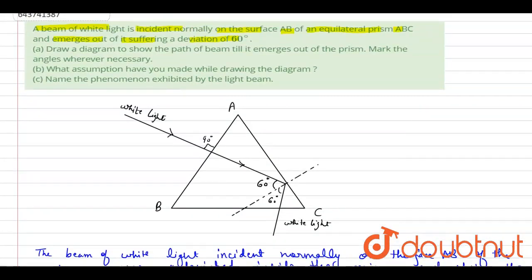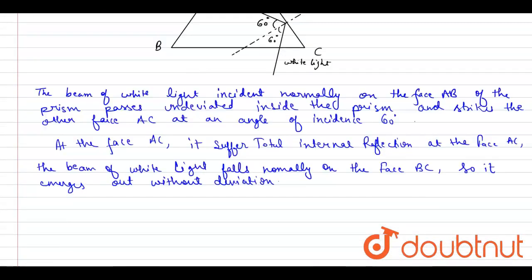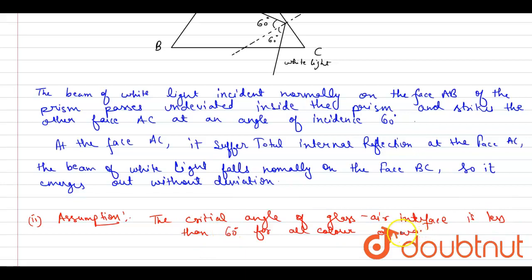And B part of this question: What assumption has you made while drawing the diagram? So the assumption is: The critical angle of glass-air interface is less than 60 degree for all colors of white light.